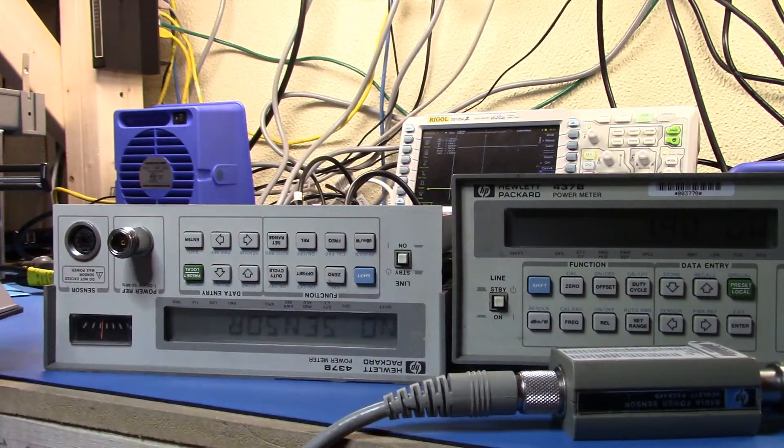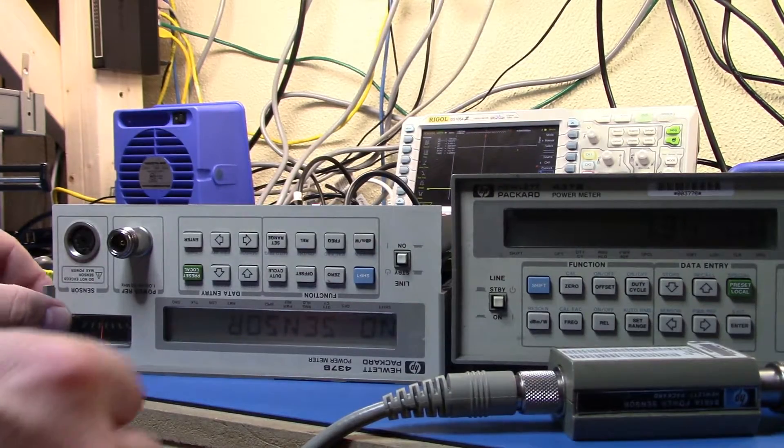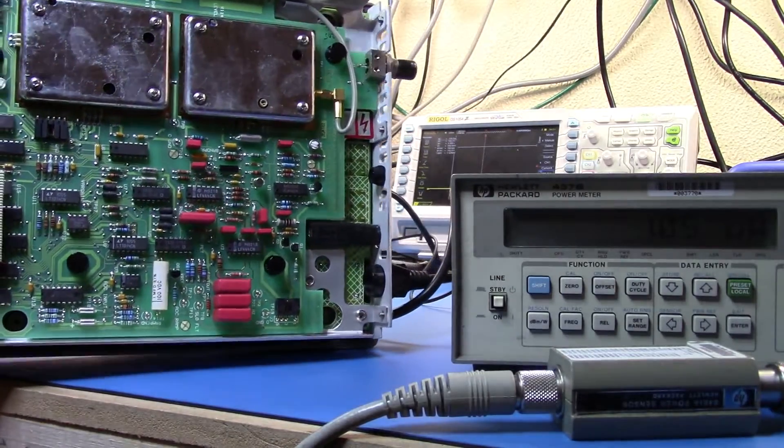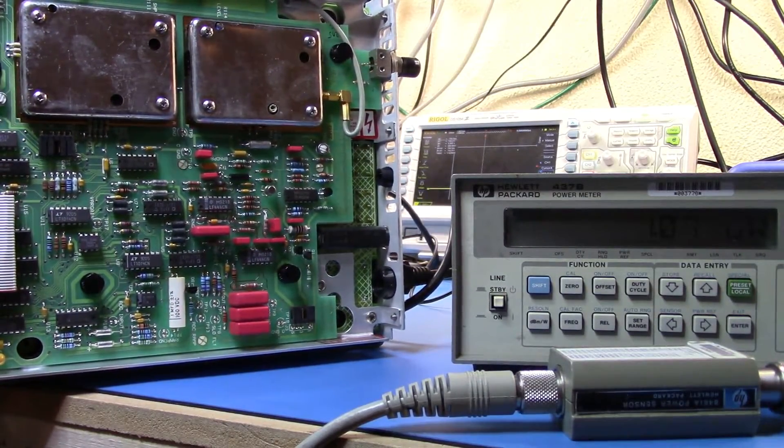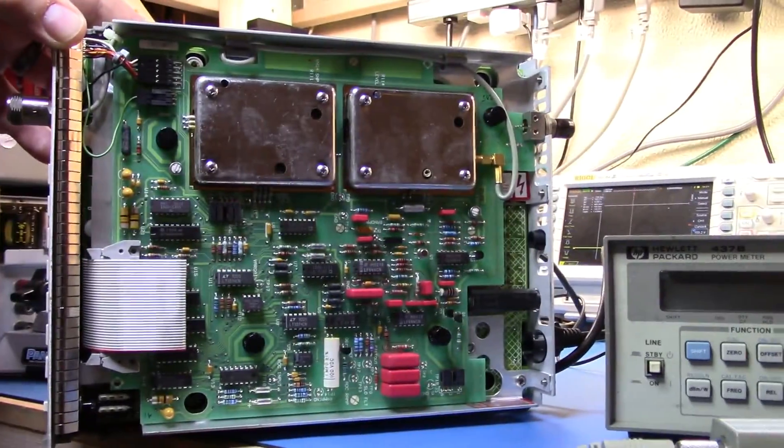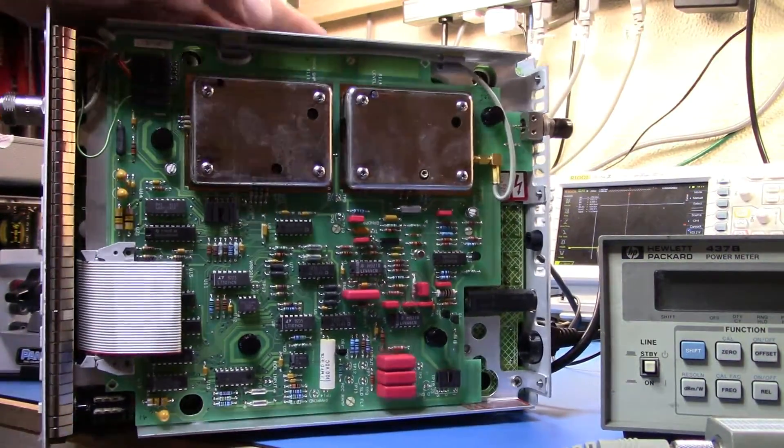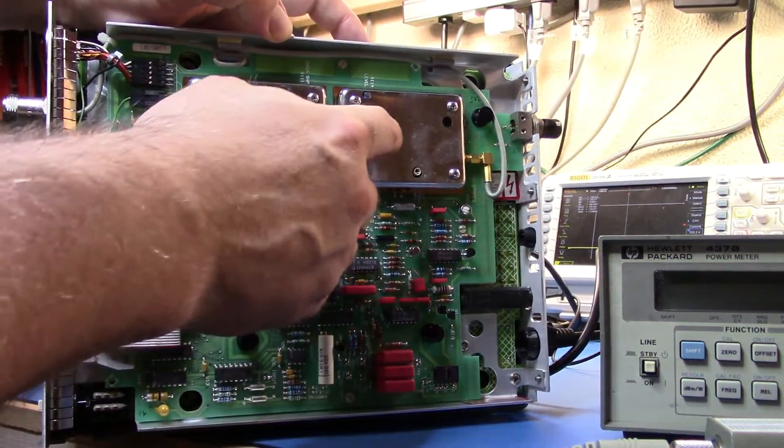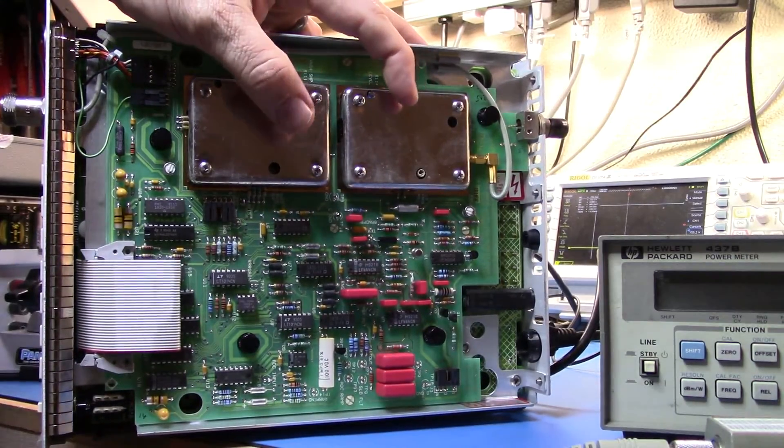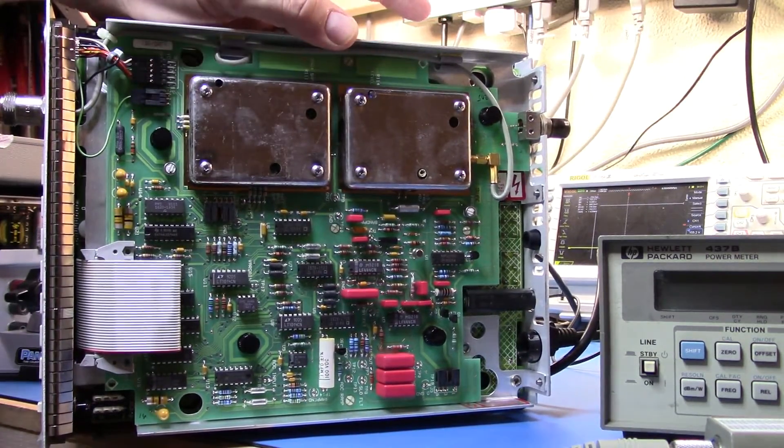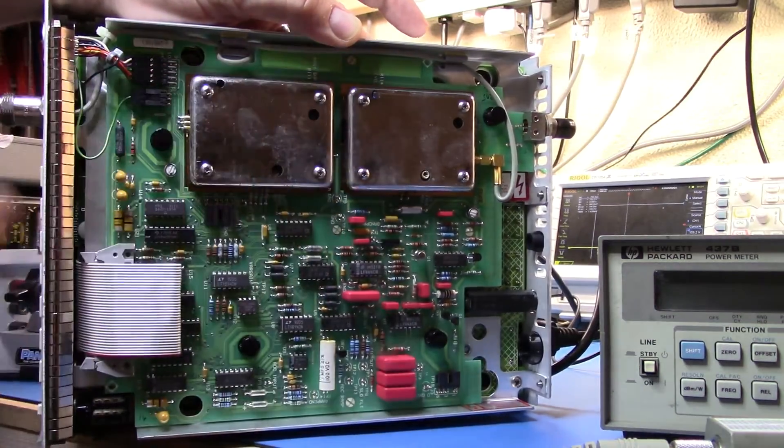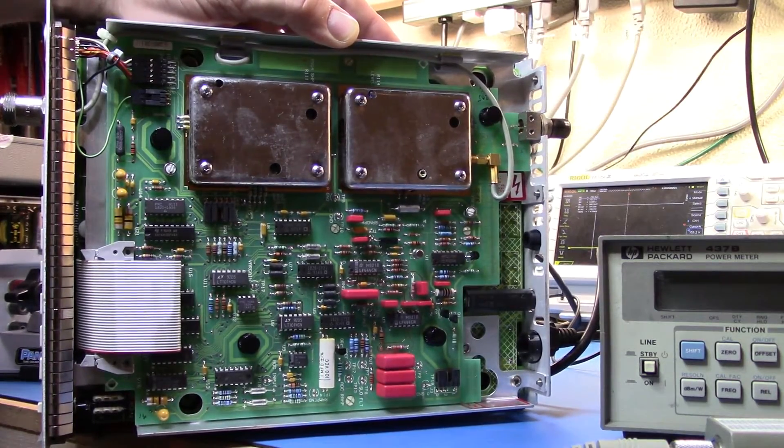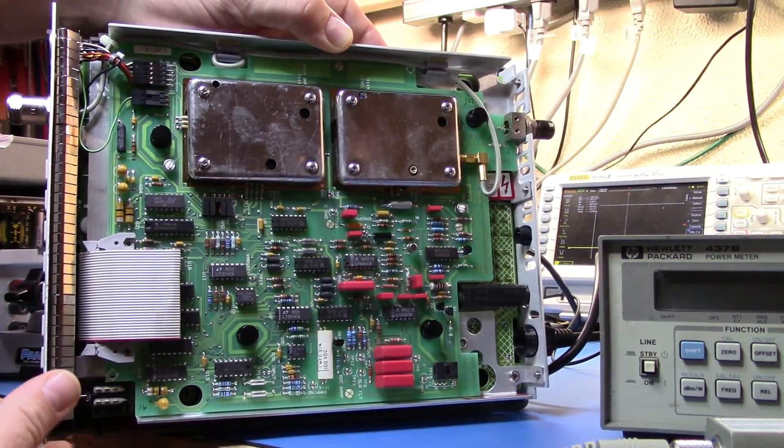Okay, well, here we are with the lid off the 437 here. And if we turn it on its side, what you can see here, if we take a bit of a, if we just move the camera, this is basically the main board. There's another board on the top here. These two cans are where they do the frequency generation stuff. And so what we're going to do is modify this trimmer here that will help us set the actual level of the output reference.